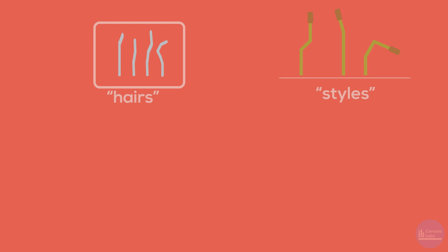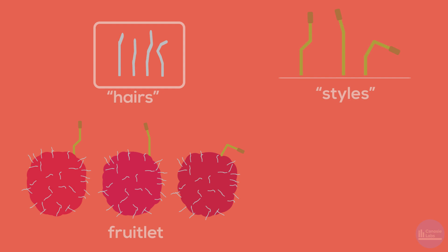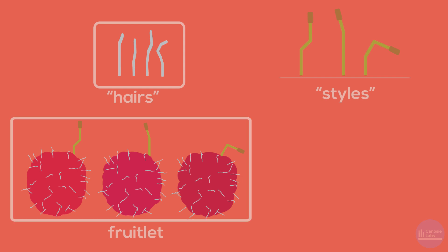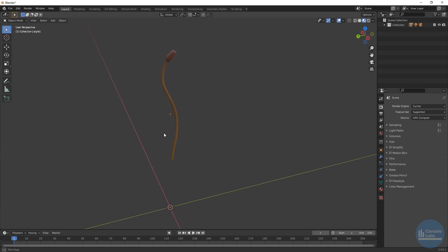With geometry nodes it's important to plan what we're going to build. First, we'll create a bunch of hair objects grouped into a collection, used in each fruitlet. Second, we'll create a few styles with different shapes and sizes. Third, we'll create our fruitlet base object with some surface displacement — a few of them with slightly different displacement values for diversity. Fourth, we'll create our final fruitlet object pairing each fruitlet with a style and adding hair using geometry nodes. Finally, we'll construct the final raspberry object using the fruitlet collection, defining the overall shape with a base mesh.